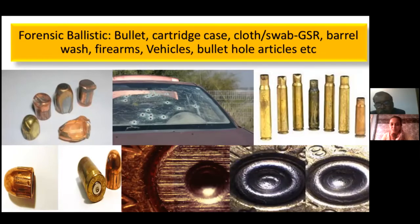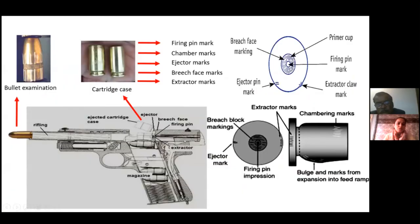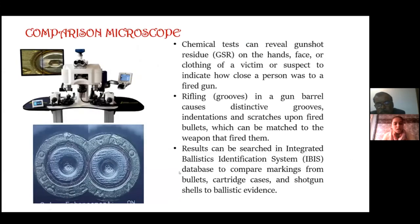Regarding forensic ballistics — since it has been covered in detail by another expert — briefly, in those cases we come across cartridge cases, bullets, and fragmented bullets. For cartridge cases, we examine firing pin marks, chamber marks, ejector marks, extractor marks, and breech face marks. For bullets, we examine rifling marks. These examinations are done using a comparison microscope, and we also have IBIS which provides very good examination procedures for bullet and cartridge case samples.